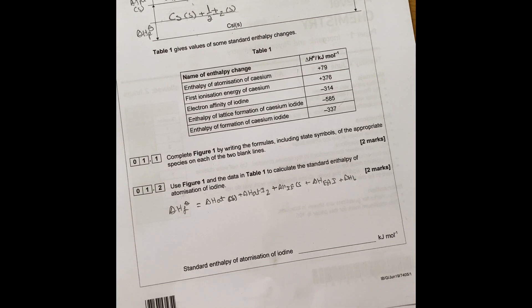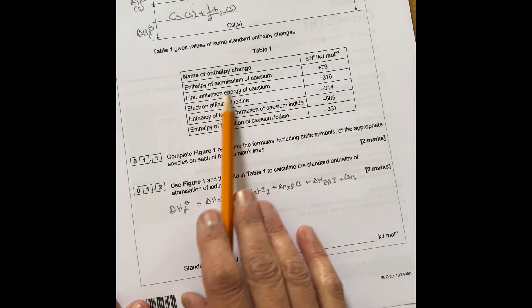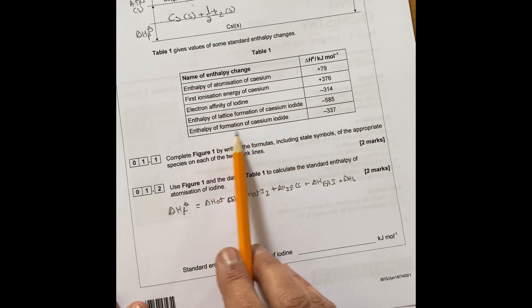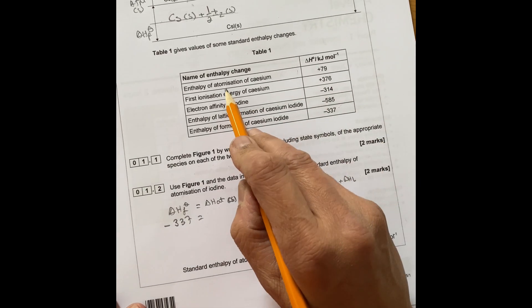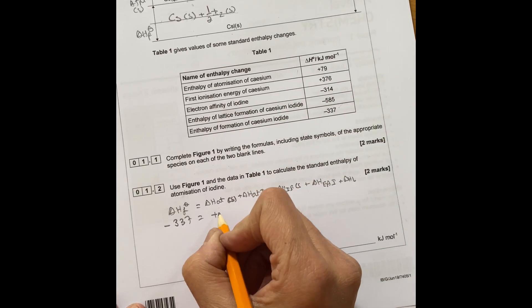So if you know this is always your start, then you can rearrange what your unknowns are in there. Looking at this table, the enthalpy change of formation is minus 337 equals to atomization of cesium is plus 79.